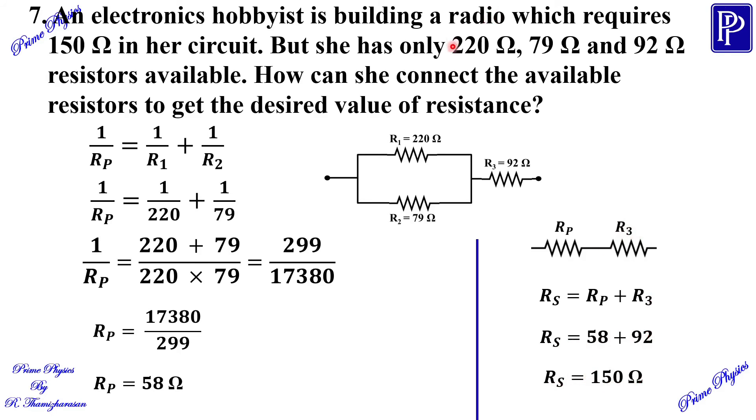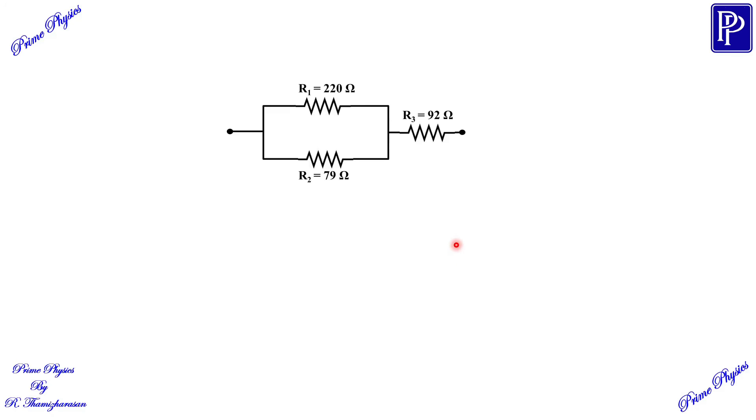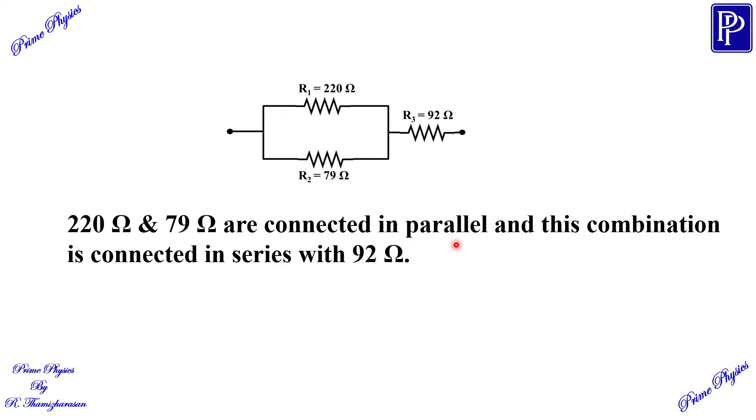When we connect the available resistors, we get the desired value of 150 ohm resultant resistance. This is the conclusion: 220 ohm and 79 ohm are connected in parallel and this combination is connected in series with 92 ohm.